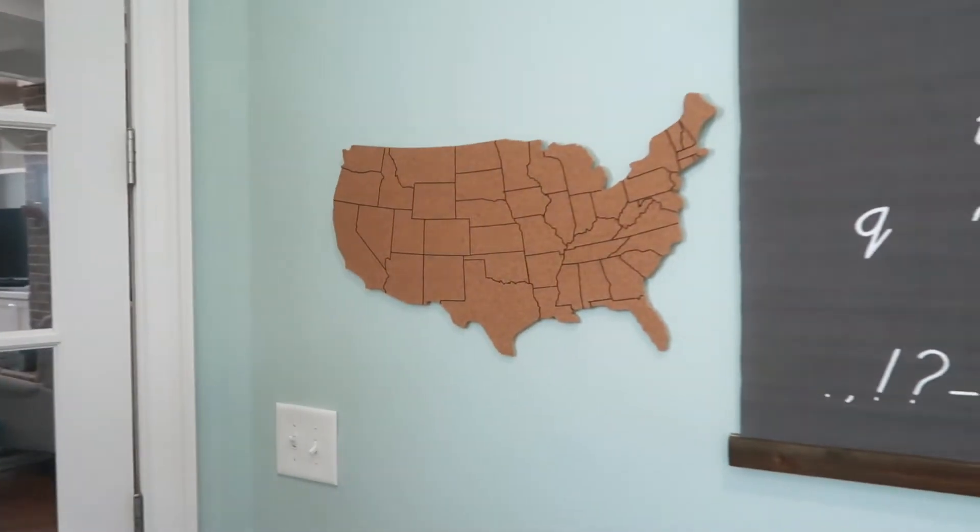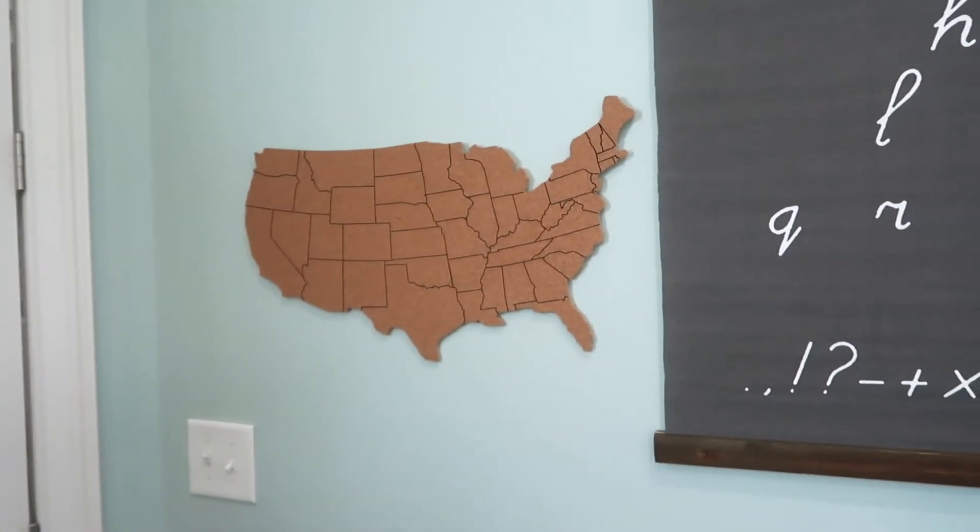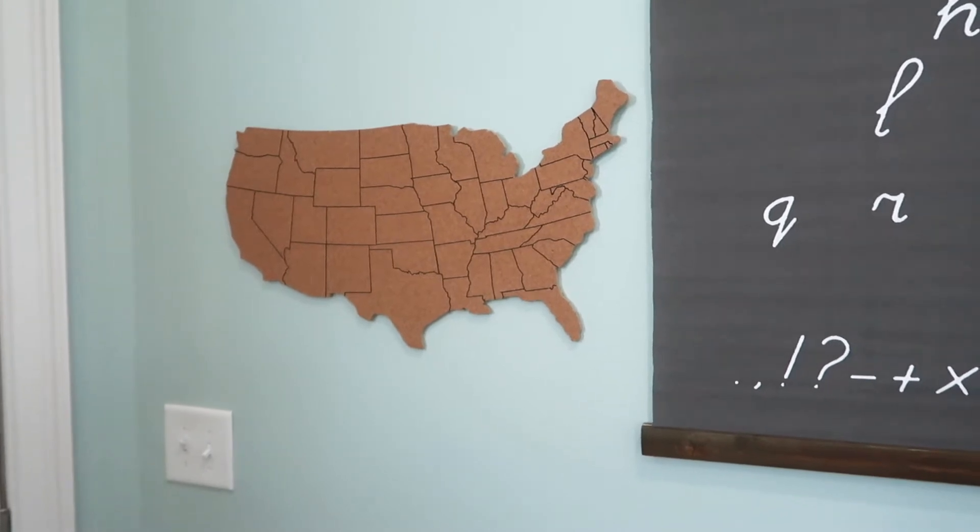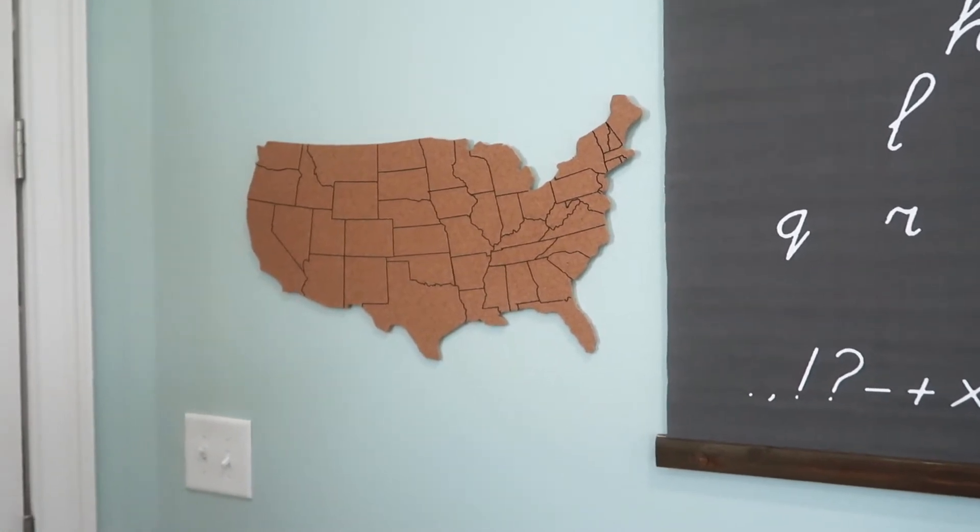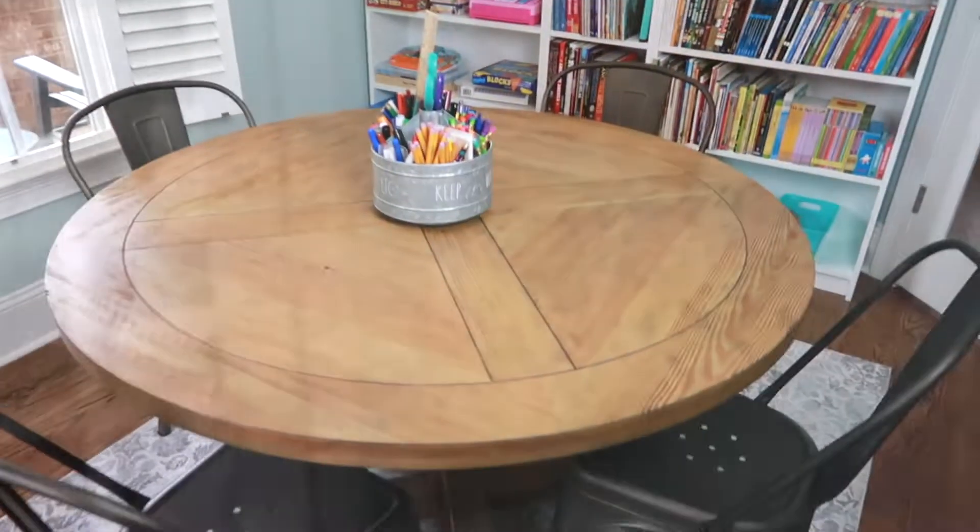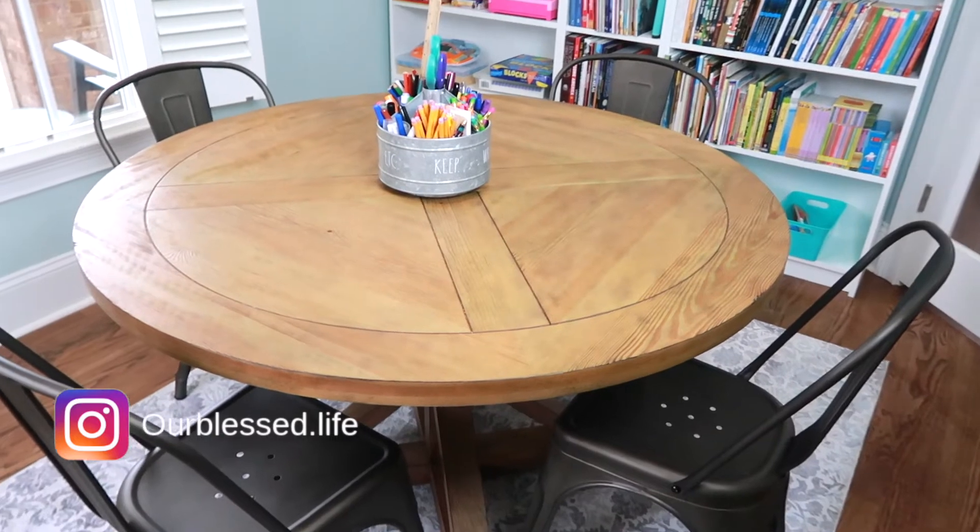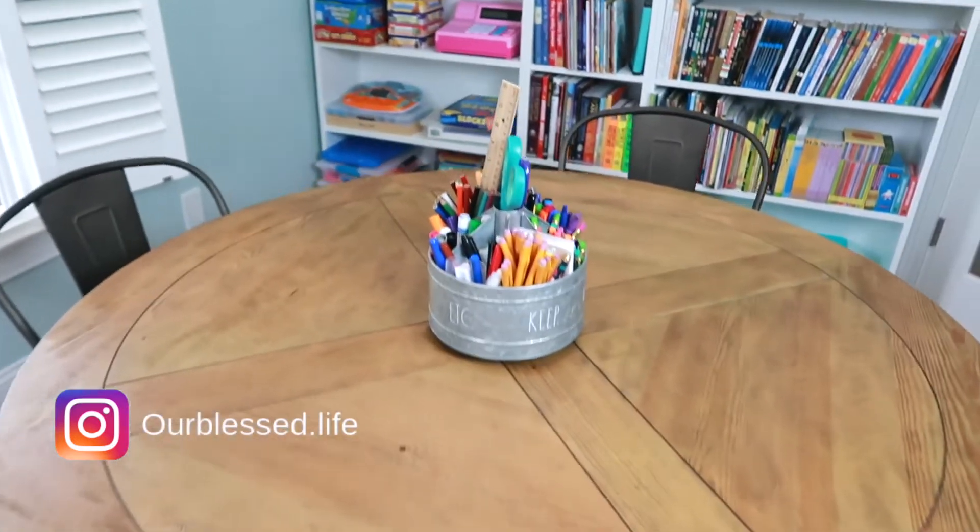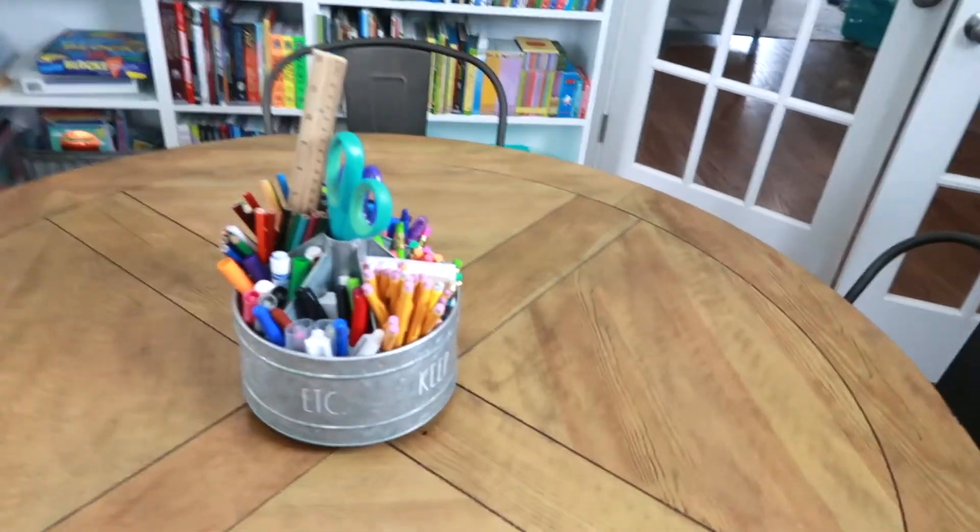We did add a little cork board of the United States. It's like a little bulletin board type of thing so we can put pins in there if we visit places. I'm excited to use that with Sophie. This is our homeschool table and this is the same table, same chairs. We still have our supplies in this little caddy in the middle of the table.